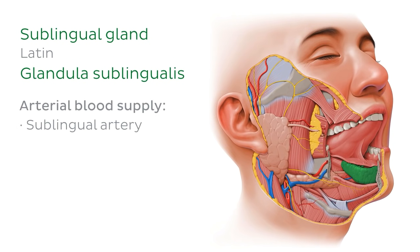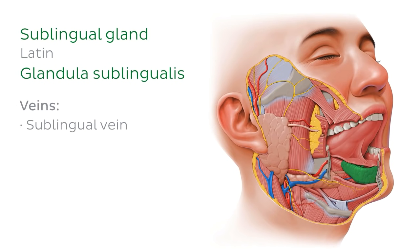As for the arterial blood supply of the sublingual gland, there are two separate arteries supplying it. These are the sublingual artery, which you see here, and is a branch of the lingual artery. The other artery supplying the sublingual gland is the submental artery, a branch of the facial artery, which has been cut out of this image but looks something like this. The veins responsible for draining the sublingual gland have corresponding names to those of the arteries.